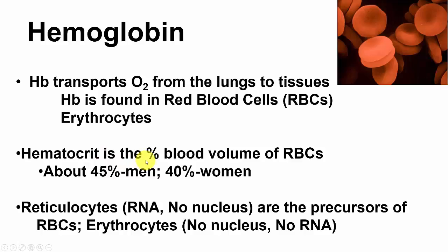Hematocrit is the percentage of blood volume made up of red blood cells — just let blood settle. The normal level is about 45% for men and around 40% for women. Reticulocytes have RNA but no nucleus and are the precursors of red blood cells. Erythrocytes have no nucleus and no RNA.